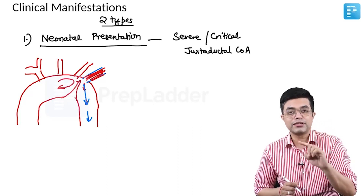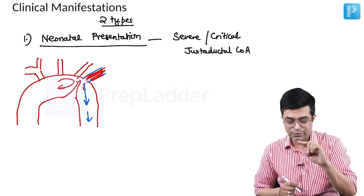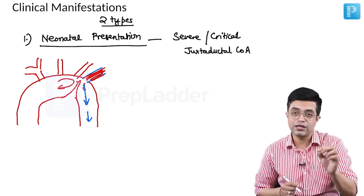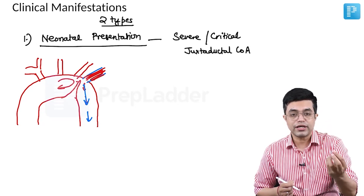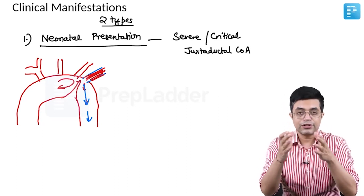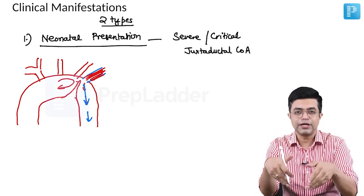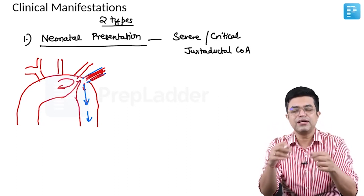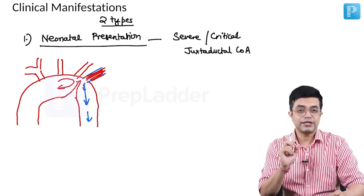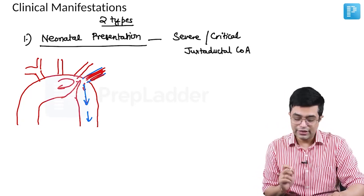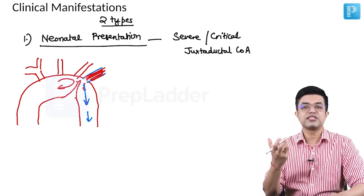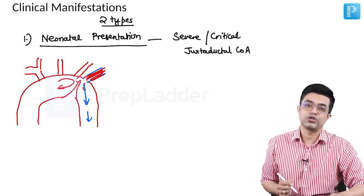Since systemic circulation is being maintained by the ductus arteriosus, this is an example of a duct-dependent systemic circulation. You give prostaglandin to open the ductus arteriosus, which ensures blood supply to the lower limbs until surgery can be undertaken. This type of presentation is seen in neonatal severe critical juxtaductal coarctation of aorta.